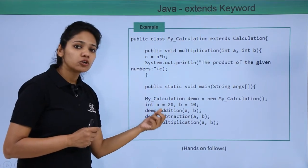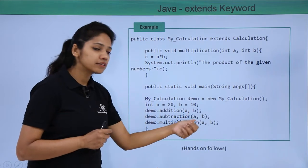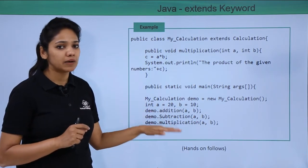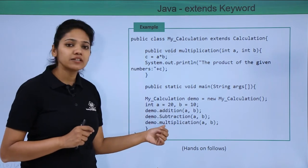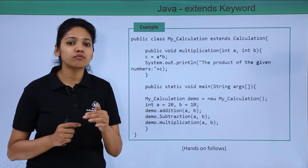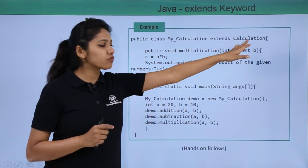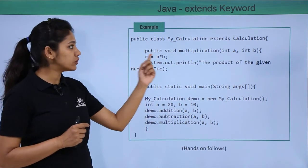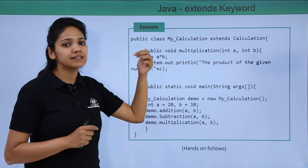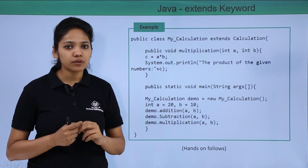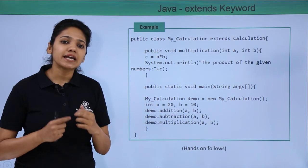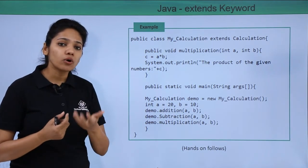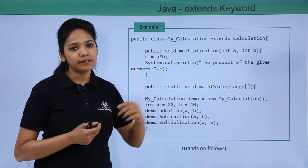You write the object reference dot the method name and the values in the parameters — similarly for subtraction and multiplication. The addition and subtraction are called from the parent class, that is from Calculation, while multiplication is a unique feature of the child class myCalculation. Let us now execute this program practically to understand how you can call or acquire the properties or methods from your parent class.